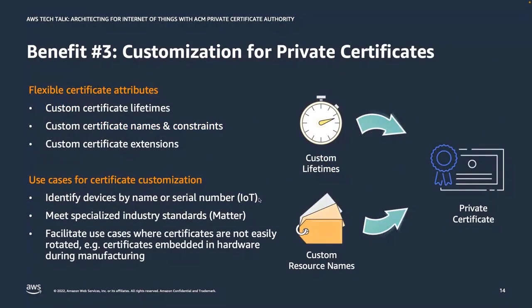ACM Private CA also provides the ability to customize issued certificates — you can assign custom lifetimes, whether one week or 100 years. As of March 2022, you can also assign custom subject names, extensions, and name constraints. This has interesting applications from managing and identifying certificates at scale to tagging for analytics or machine learning use cases. One notable application is meeting industry standards like Matter — the new smart home device standard — which requires setting custom identifiers on certificates. If you want to stay aligned with new industry standards and be part of the Matter ecosystem for connected devices, this feature can help you do that.